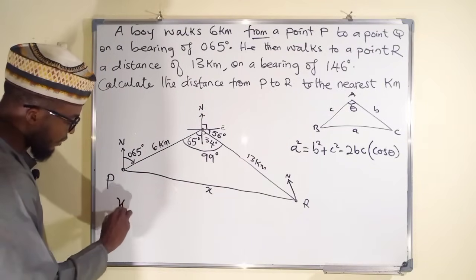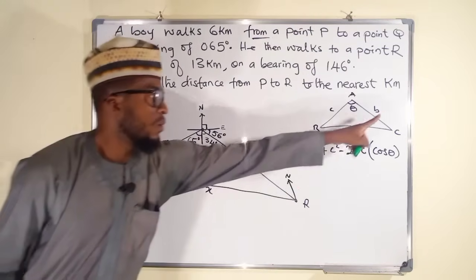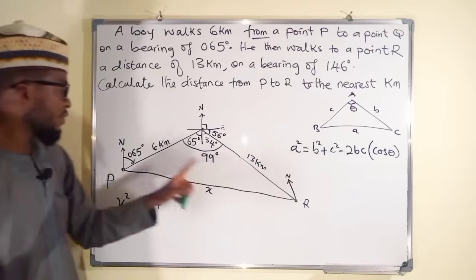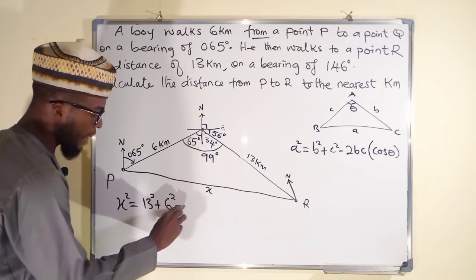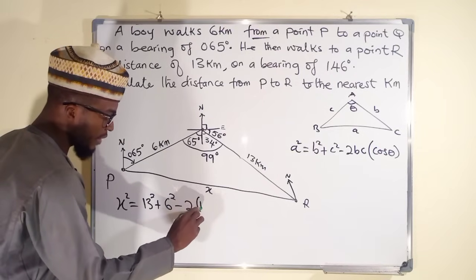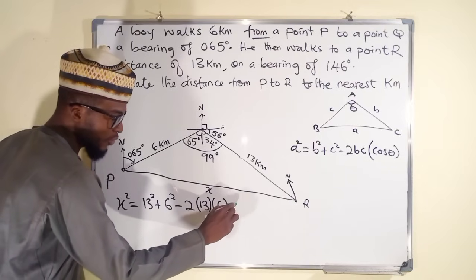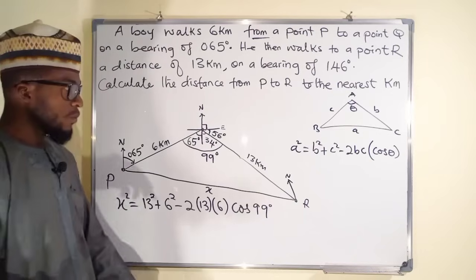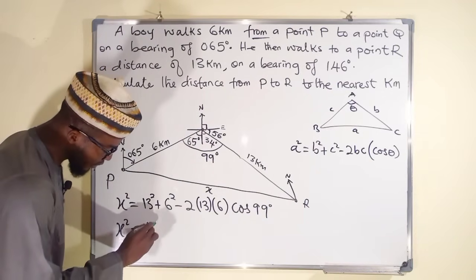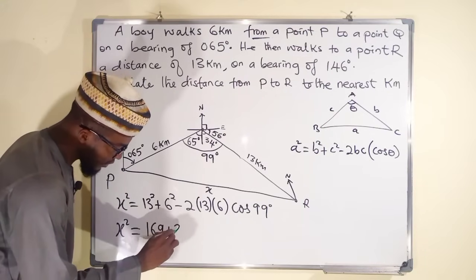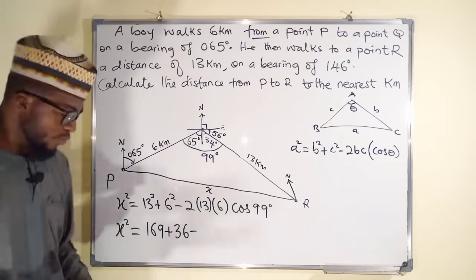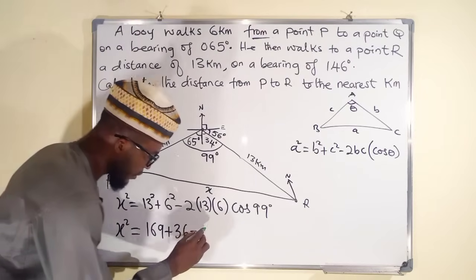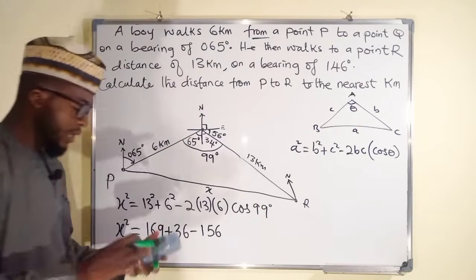Applying the formula: x squared equals 13 squared plus 6 squared minus 2 times 13 times 6 times cos(99°). So x squared equals 169 plus 36, minus 156 times cos(99°). Using a calculator, 2 multiplied by 13 multiplied by 6 gives 156.